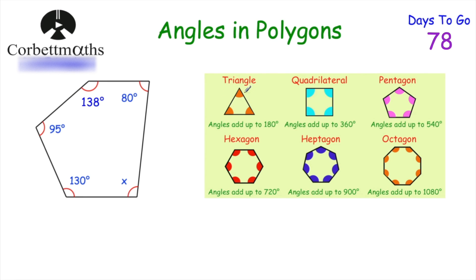For a triangle the angles add up to 180 degrees; a quadrilateral, a four-sided shape, they add up to 360 degrees; a pentagon they add up to 540; a hexagon 720 and so on. Every time you add another side you add another 180 degrees to the interior angles — what the angles inside the shape add up to. So for instance for a nonagon, a nine-sided shape, you add another 180 and so on.